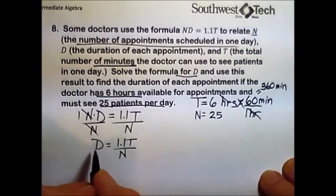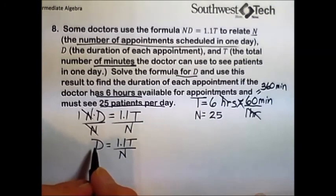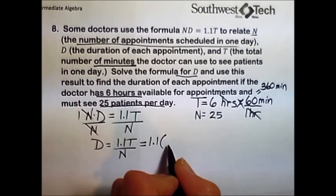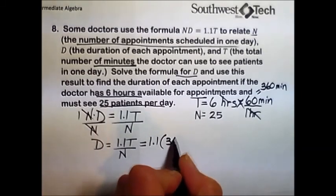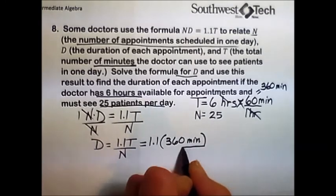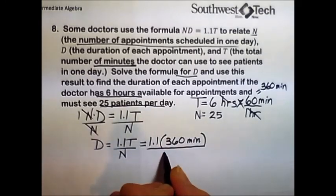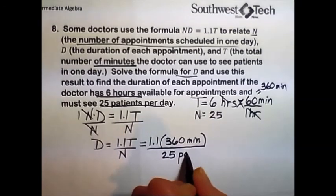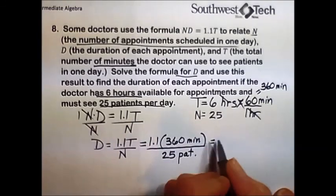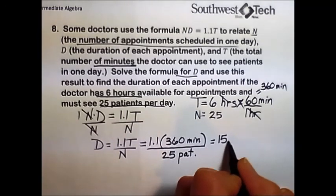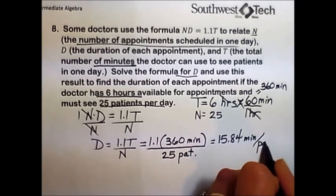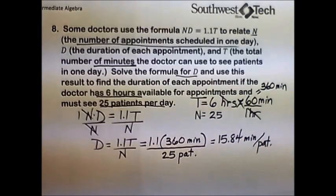Now we're set and ready to find how long the doctor will be able to spend with each patient. 1.1 times our T in minutes, which is 360 minutes, divided by N, the number of patients, there were 25 patients given. We'll multiply and divide, and the result is 15.84 minutes per patient would be the amount of time.